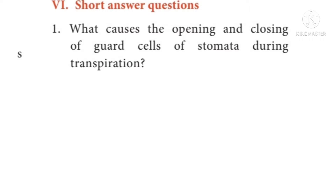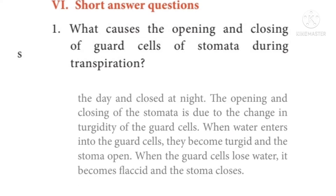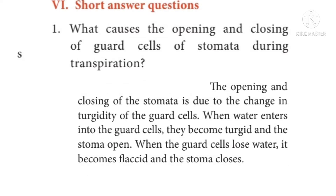What causes the opening and closing of the guard cells of the stomata during transpiration? The answer is on page 202. The opening and closing of the stomata is due to the change in turgidity of the guard cells. When water enters into the guard cells, they become turgid and the stomata opens. When the guard cells lose water, they become flaccid and the stomata closes.